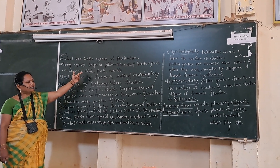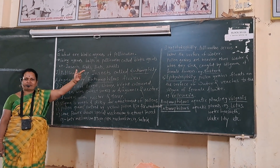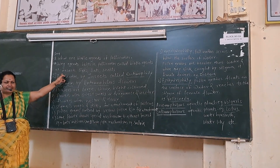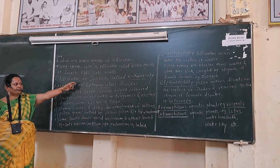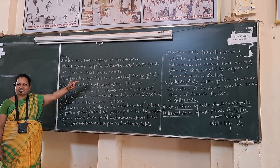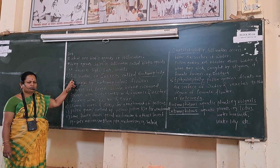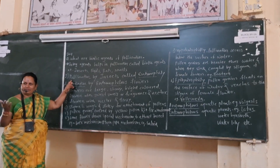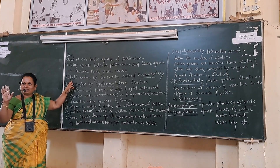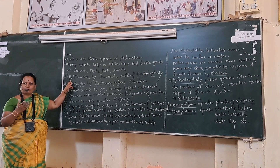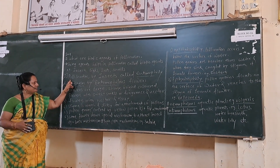Living agents help in pollination and are called biotic agents. Examples include insects, birds, bats, snakes, etc. Human beings and other animals also help in pollination and are called biotic agents.